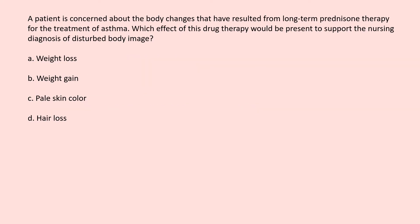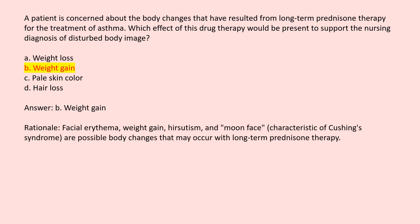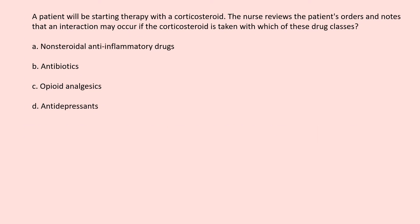A patient is concerned about body changes resulting from long-term prednisone therapy for the treatment of asthma. Which effect of this drug therapy would support the nursing diagnosis of disturbed body image? A. Weight loss. B. Weight gain. C. Pale skin color. D. Hair loss. Answer B. Weight gain. Rationale: Facial erythema, weight gain, hirsutism, and moon face characteristic of Cushing's syndrome are possible body changes that may occur with long-term prednisone therapy.